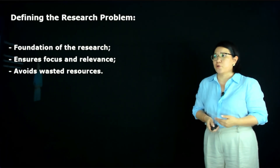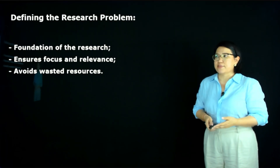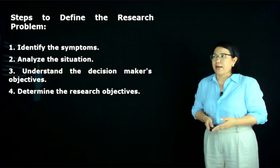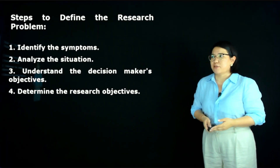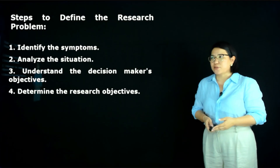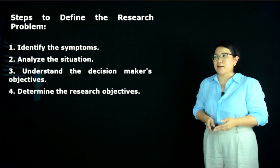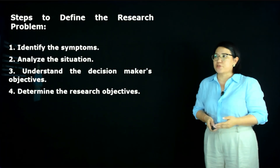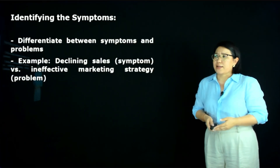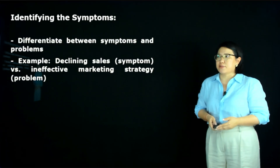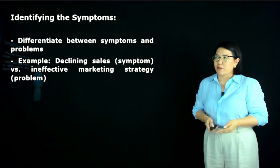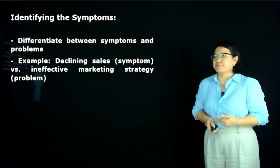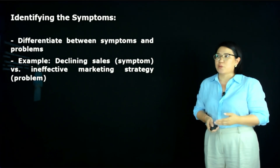Defining the research problem is the foundation of research — it ensures focus and relevance and avoids wasting resources. The steps to define the research problem are: identify the symptoms, analyze the situation, understand the decision-maker's objective, and determine research objectives. Identifying symptoms means distinguishing between symptoms and the actual problem. For example, a decline in sales is a symptom, whereas an ineffective marketing strategy is the actual problem.